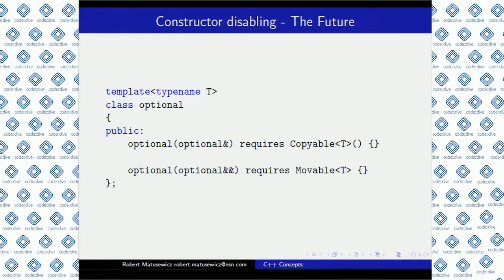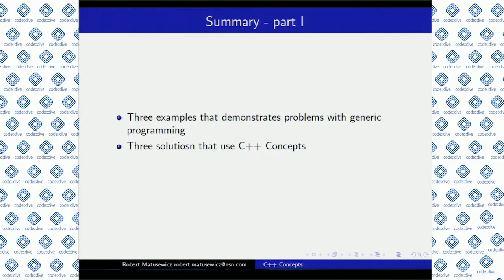I gave you three examples that hopefully illustrate the problem we now have with generic programming. I showed you three solutions you can currently use, and I hope you are all thinking that those solutions aren't very beautiful. I also showed you some examples of code that could use C++ concepts, which I hope you are thinking is more readable and nicer to both the writer and the reader. Now let's go on a trip to see what those concepts really are.